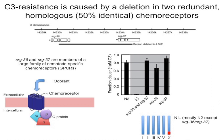These GPCRs straddle intracellular and extracellular environments through seven transmembrane domains. An odorant binds the protein, changing propensity to bind G protein alpha, beta, and gamma subunits, leading to intracellular signaling. Creating a near-isogenic line in N2 with just this region replaced shows it no longer goes into dauer in response to C3 — this small region is sufficient to provide C3 pheromone resistance. Rescuing with a transgene of either SRG36 or SRG37 alone restores dauer entry, suggesting they are redundant receptors.